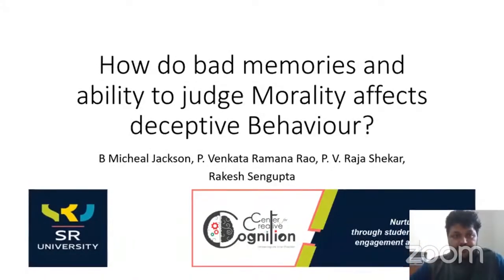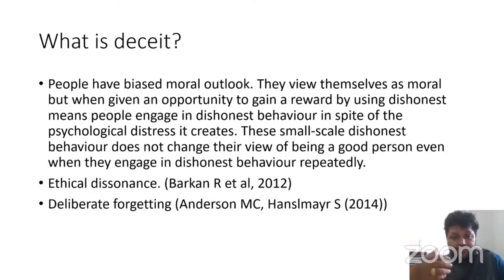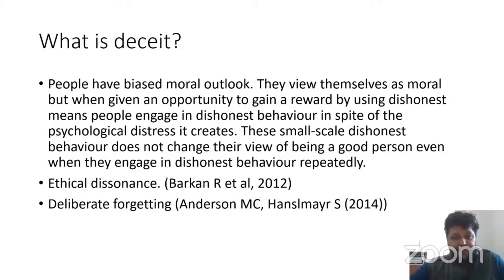To begin, we need to consider what deceit actually is. We know that people have a biased moral outlook — they view themselves as moral. But when given an opportunity to gain reward through dishonest means, people engage in dishonest behavior despite the psychological distress it creates. This small-scale dishonest behavior does not change their view of being a good person, even when they engage in it repeatedly. Researchers have shown this is an ethical dissonance, resolved by making justifications that fit the criteria of being moral — by disengaging from dishonest actions or stretching the truth.